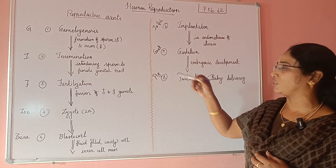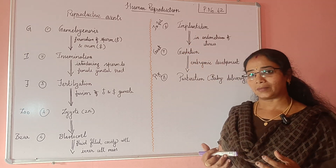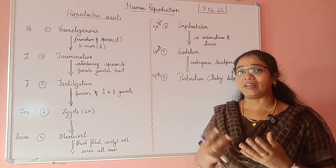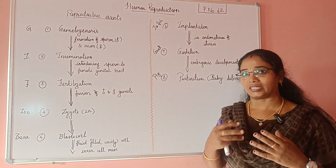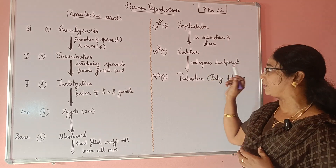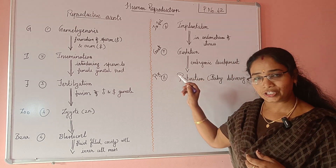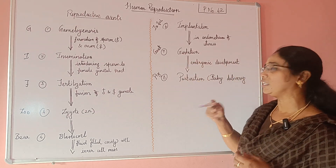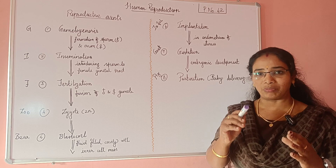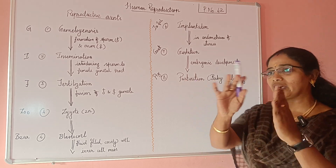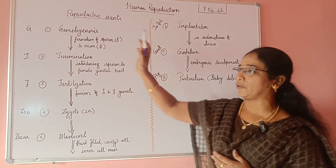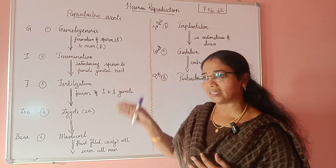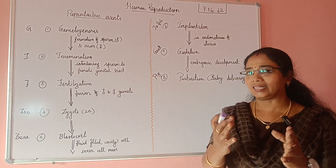This process leads to the gestation period. The gestation period is the embryonic developmental stage. After the gestation period comes parturition — that is baby delivery. This is a continuous process — these are the reproductive events.